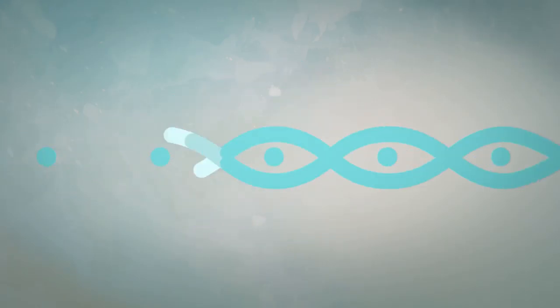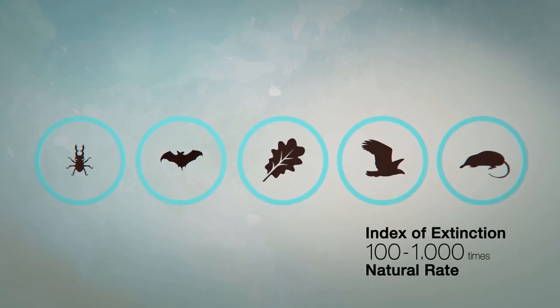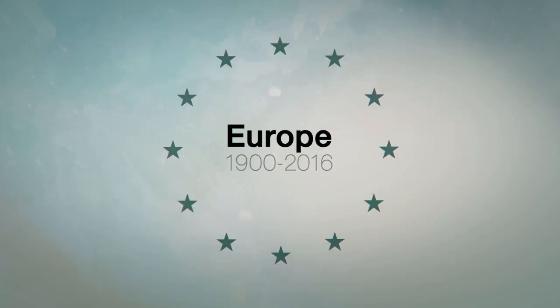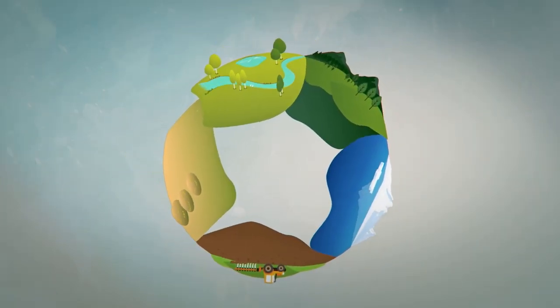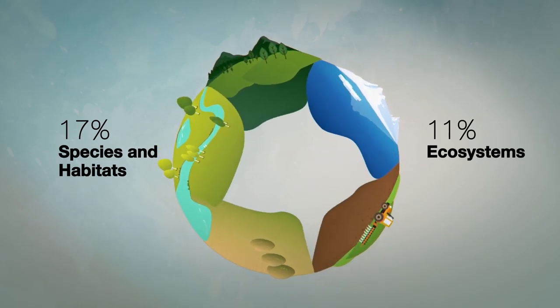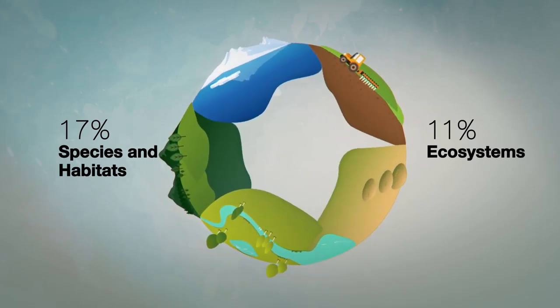It is estimated that species are currently becoming extinct at between 100 and 1000 times the natural rate. Since 1900, Europe has lost 2 out of 3 of its wetlands and 3 out of 4 of its dunes. Only a small proportion of protected species, habitats and ecosystems are evolving correctly.